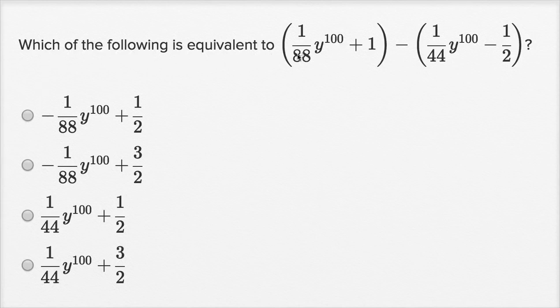Which of the following is equivalent to all of this stuff right over here? 1 over 88, or 1 88th, y to the 100th plus 1, minus this entire expression: 1 44th y to the 100th minus 1 half.